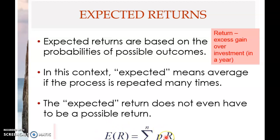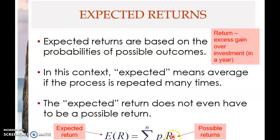There are three elements in the expected return formula. The first element is R_i — the possible return, where I represents the possibilities or scenarios, ranging from 1 to N. N means there are N categories of possibilities. The second element involves the summation symbol, which you've learned in statistics. This is a sum of products — you multiply R_i with P_i.